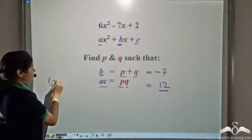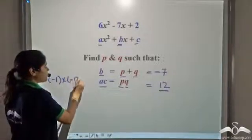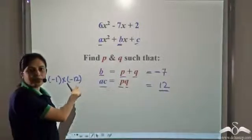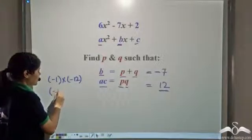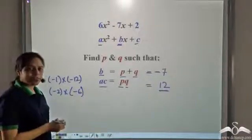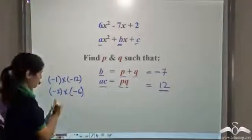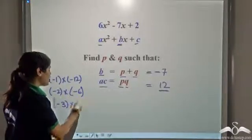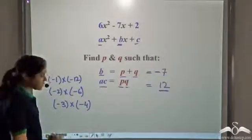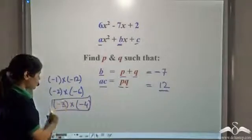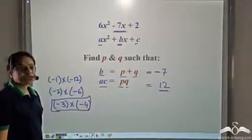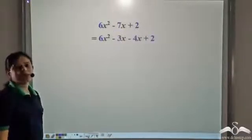Let us consider: −1 × −12 = 12, but their sum is −13, not −7. −2 × −6 = 12, but their sum is −8, not −7. −3 × −4 = 12, and −3 + (−4) = −7. So the required numbers are −3 and −4. We now write −7x as −3x − 4x.